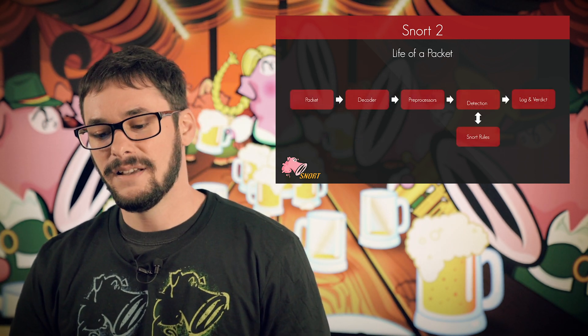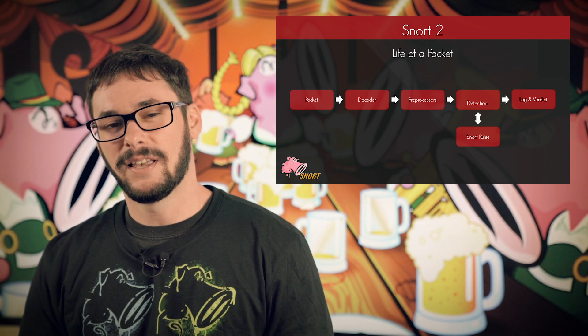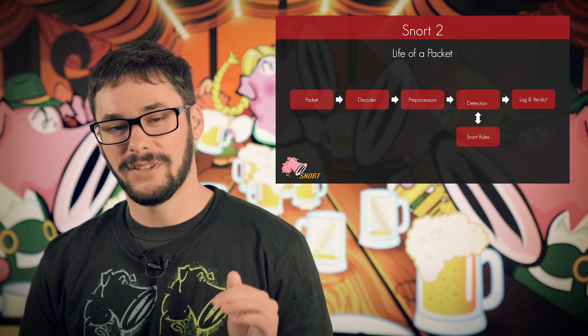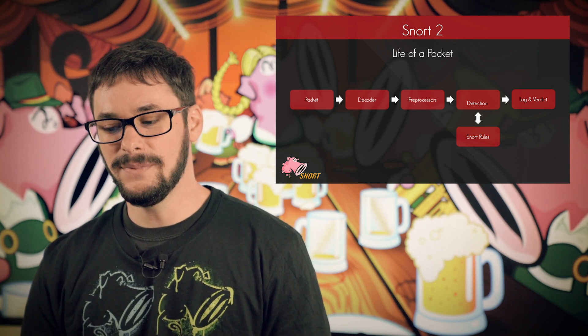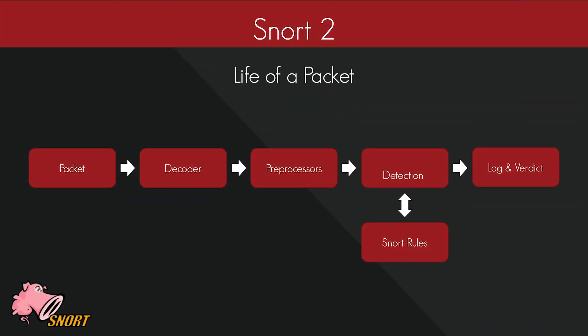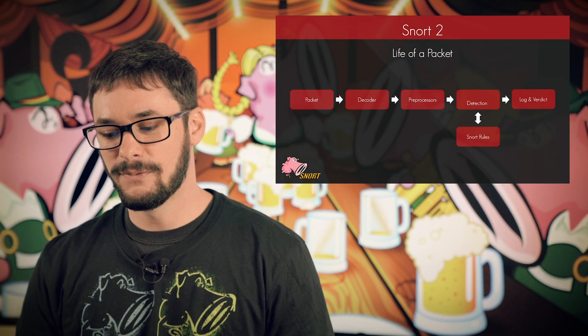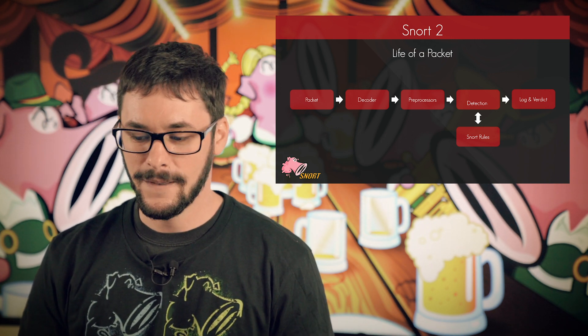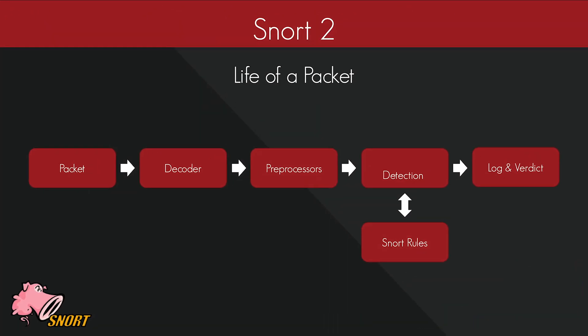Let's go over what it looks like when a packet on your network is processed by Snort at a high level. The process starts when a packet comes into your network and is received by a virtual or dedicated machine that has Snort installed. That packet is processed by Snort and first sent through the Snort decoders. The decoders have the job of determining which underlying protocols are used in the packet — for example, Ethernet, IP, and TCP. The protocol decoder performs basic operations such as looking for errors or anomalies in fields of the applicable protocol header. This is the first step in preparing the packet for further inspection.